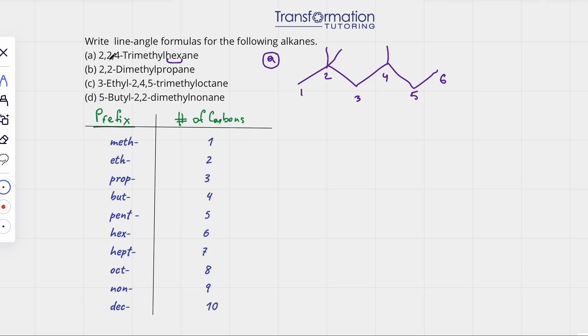We have 2,2,4-trimethylhexane. Hexane is the parent chain and hex means 6. So the parent chain must have 6 carbons. Every time there is end of the line or two lines are coming together that's a carbon. So 1, 2, 3, 4, 5, 6. We have numbered.